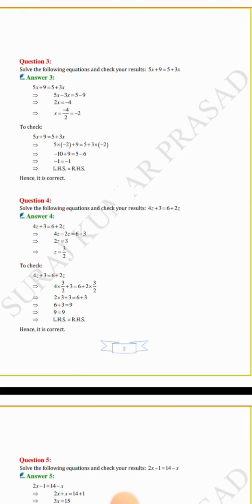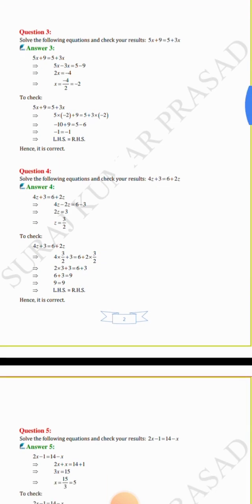Question number 4: solve 4z + 3 = 6 + 2z. Then 4z minus 2z equals 6 minus 3, giving 2z equals 3, so z equals 3 by 2.